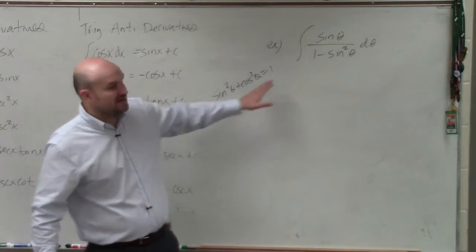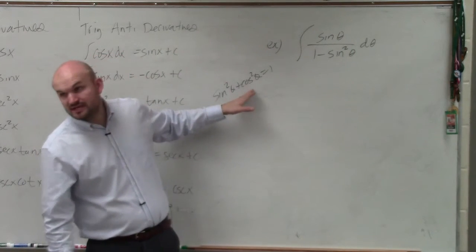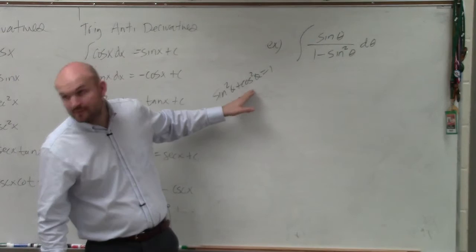Hopefully you guys see if we subtract sine squared on both sides, we get cosine squared of theta equals 1 minus sine squared of theta.